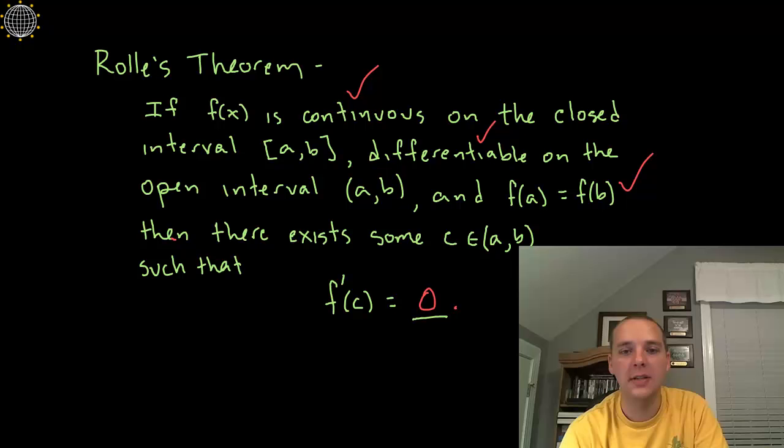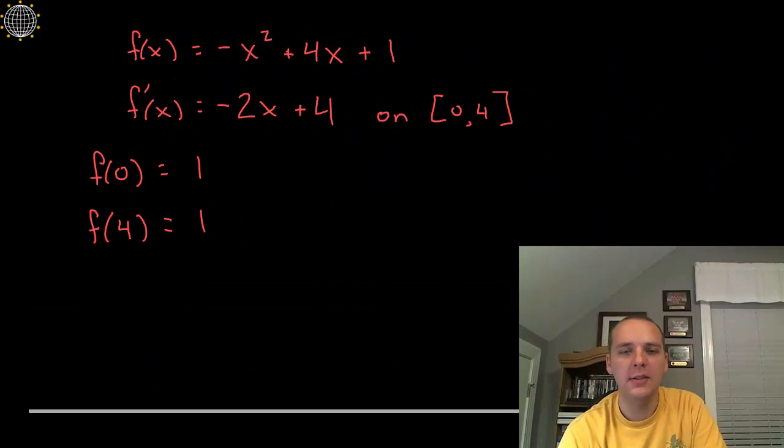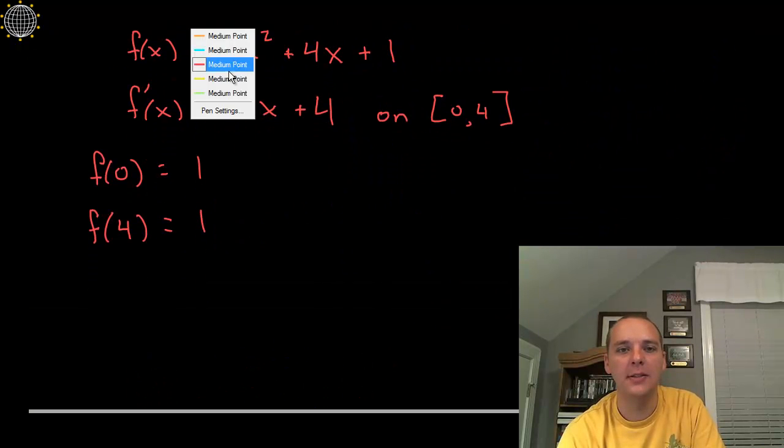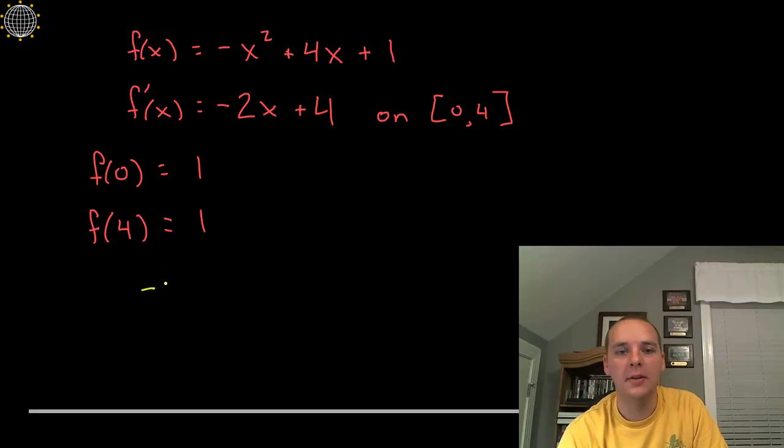But now what do we do then? If it satisfies Rolle's theorem then what's left? Well, what does the result of Rolle's theorem say? It says then there is some c value guaranteed by Rolle's theorem such that the derivative there equals zero, it promises me that. So what I'm going to do, since I know there's that type of place out there, I'm going to take the derivative, negative 2x plus 4, and I'm going to set it equal to zero because that place should exist.